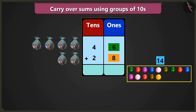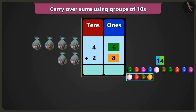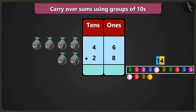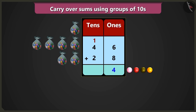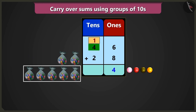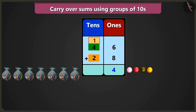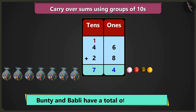Now 14, that is 1 ten and 4 ones. So from 14, we will take 1 ten and in the box of tens write it on the top in small letters, and write 4 ones in the box of ones. Now in the box of tens, adding 1 ten and 4 tens we get 5 tens, and adding 5 tens and 2 tens will be 7 tens, that is 70. So now we have a total of 7 tens and 4 ones, that is 74 marbles.